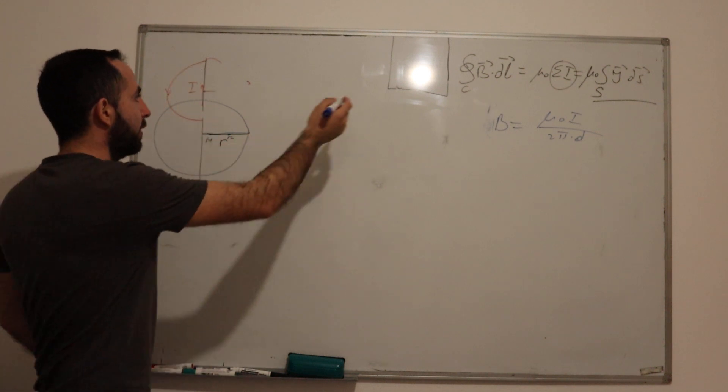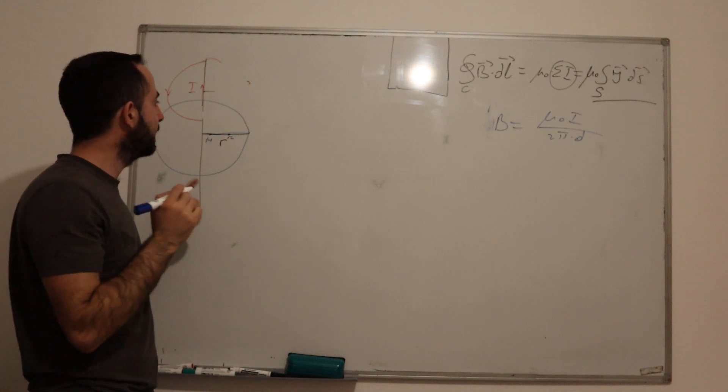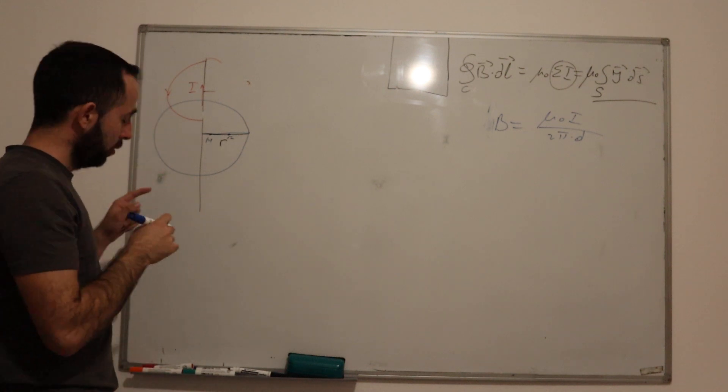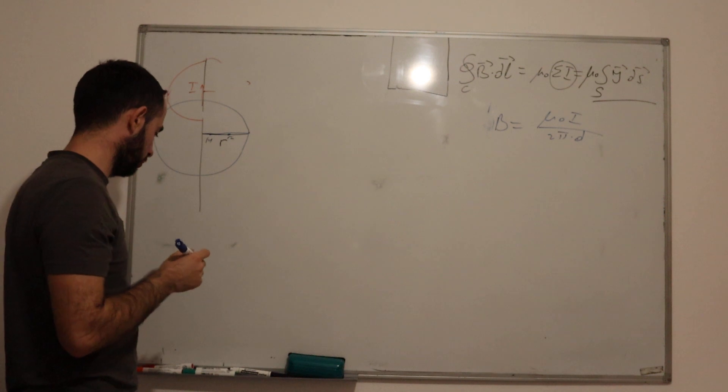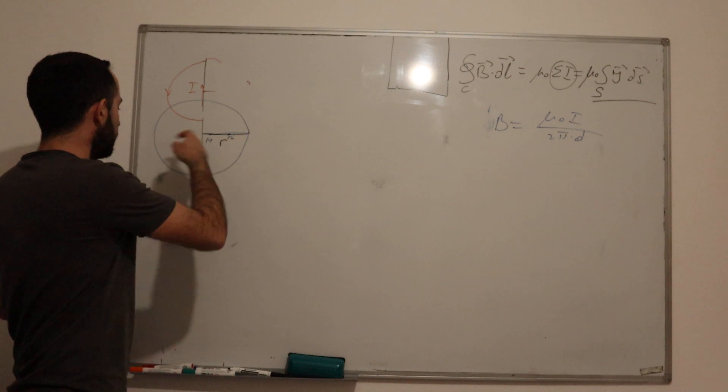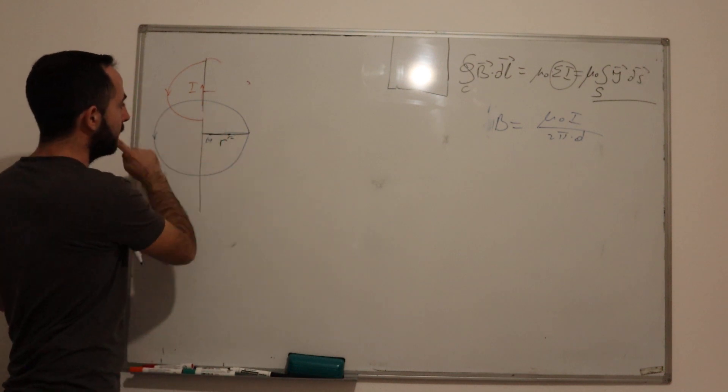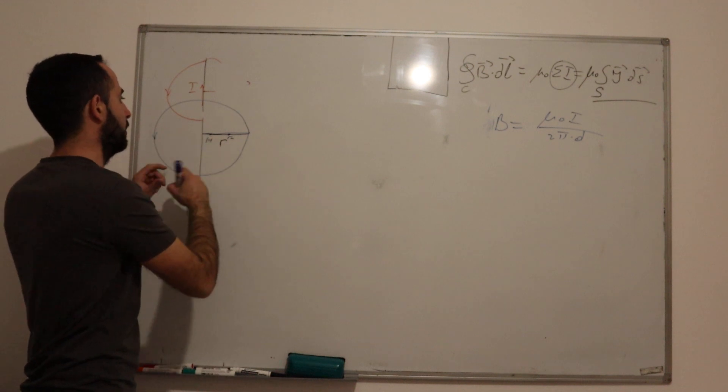So we firstly close our contour and we are calculating magnetic field on that contour. So what is the direction of our magnetic field? We know that the direction is determined with the right-hand rule and our magnetic field goes this way.